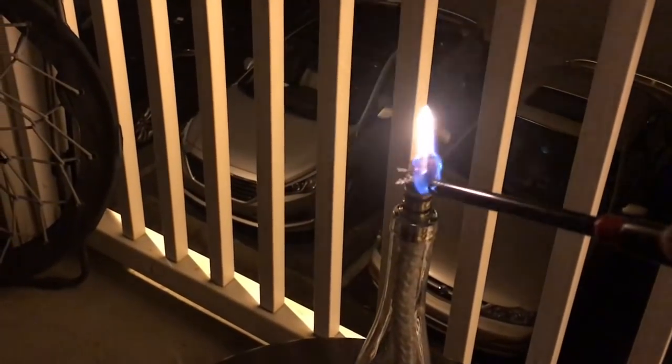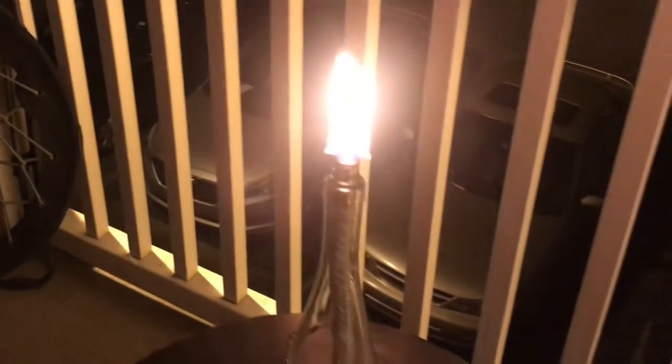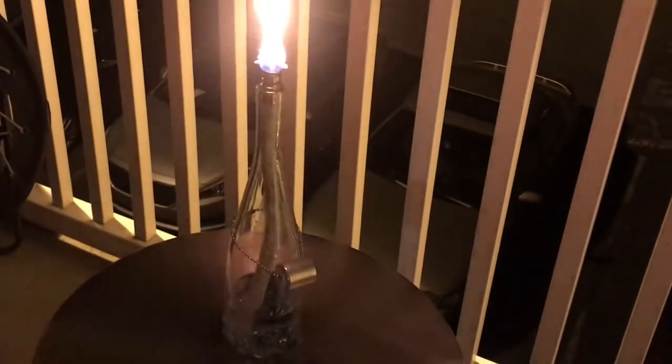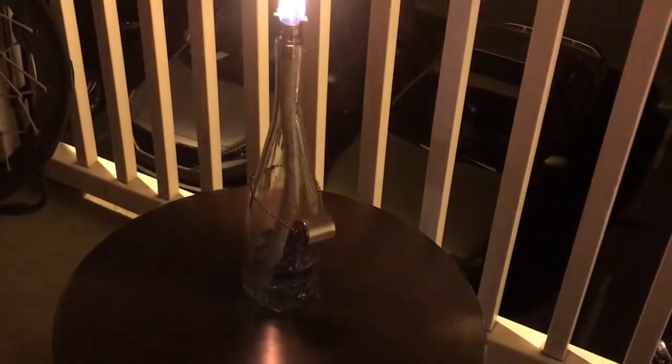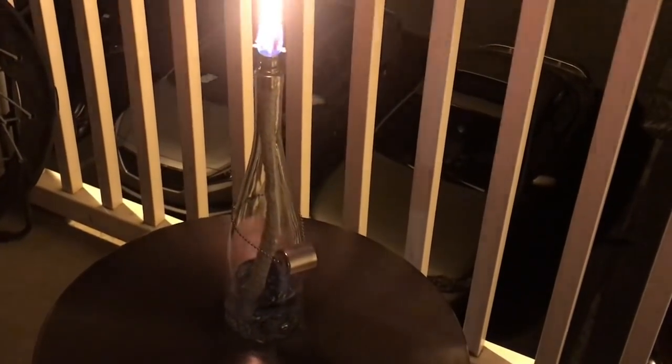I took my tabletop tiki torch outside and lit it with my long stem lighter. I also draped my stainless steel lamp cover around the neck of the bottle. So when I'm ready to put the fire out all I need to do is just drop it right on top.